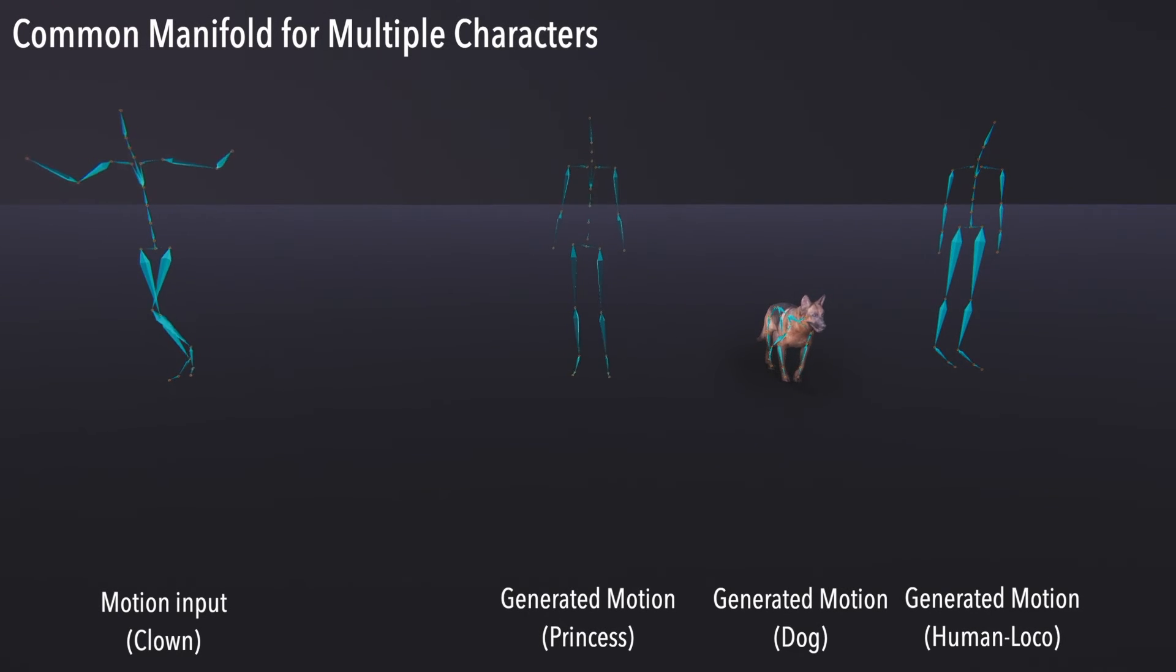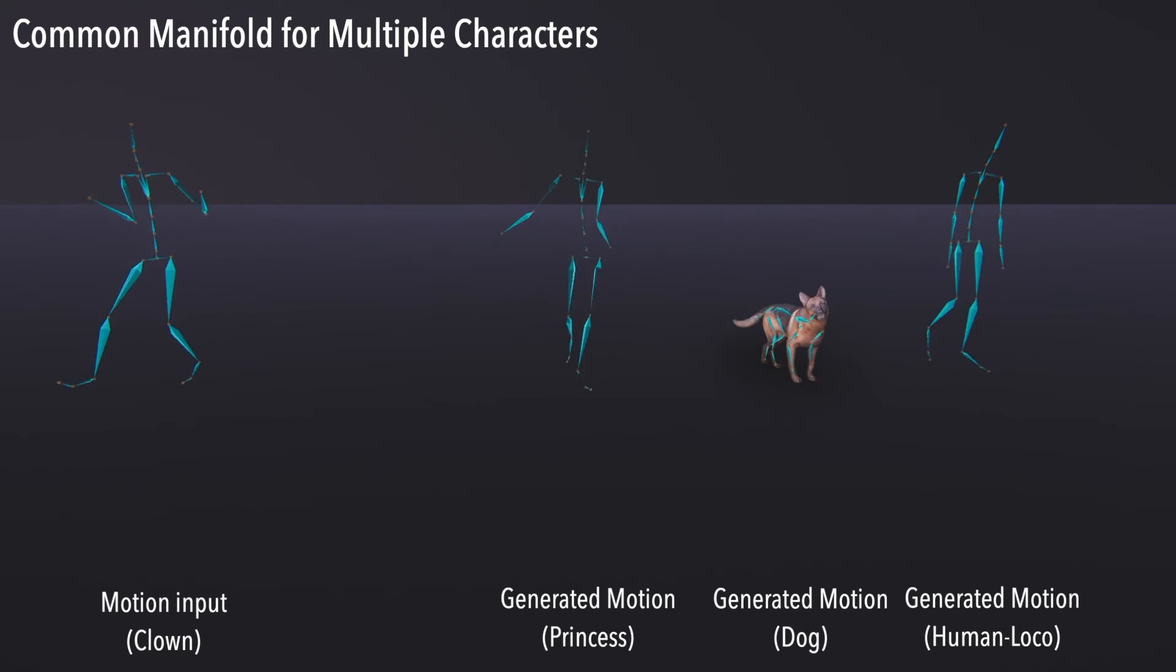When multiple autoencoders are trained on multiple datasets together, a common phase manifold can be learned. Then, we can transfer motions among various morphologies and characteristics at the same time.